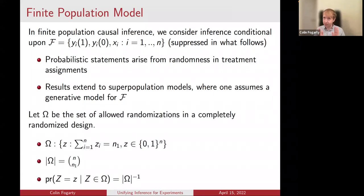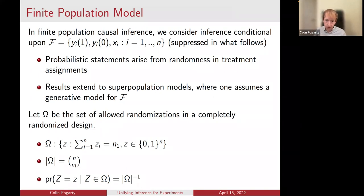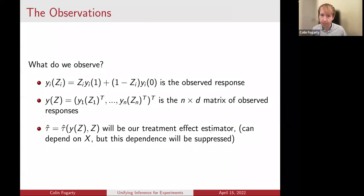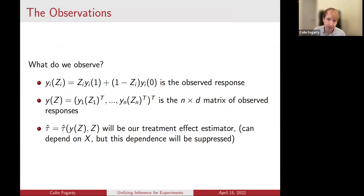τ̄ is the sample average treatment effect for the individuals in the experimental population. I'll additionally consider regression-adjusted estimators; xᵢ are my vector of pretreatment covariates for each individual — variables whose values are not affected by the treatment assigned. In the finite population model, we condition on the set ℱ, the features of the enrolled individuals. Probabilistic statements arise solely from randomization — the randomness in treatment assignment. Results extend naturally to superpopulation formulations. For simplicity I'll consider completely randomized experiments, where Ω is the set of allowed randomizations — exactly N₁ individuals receive the treatment and N₀ receive control. The probability of any treatment assignment is uniform over Ω.